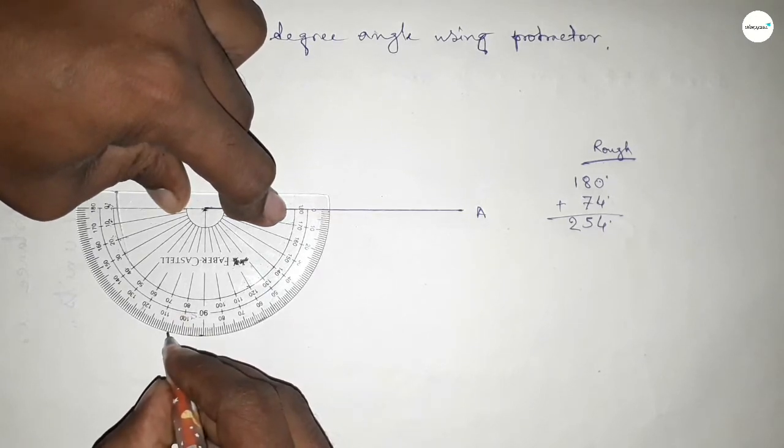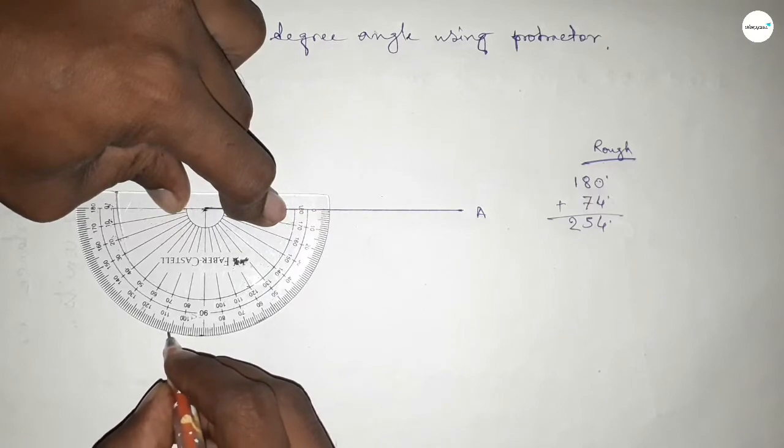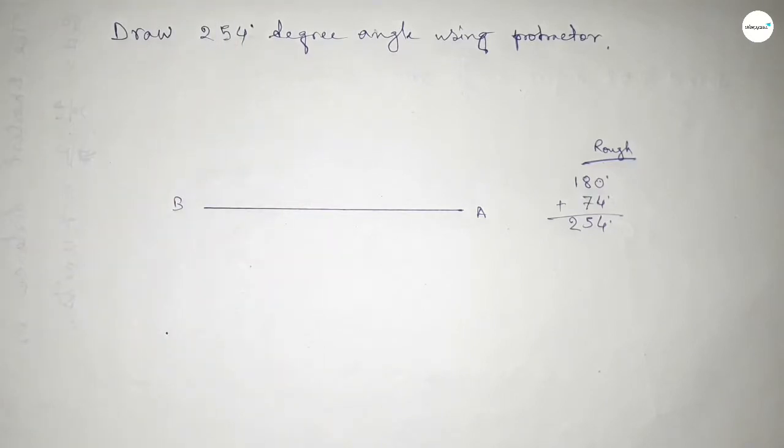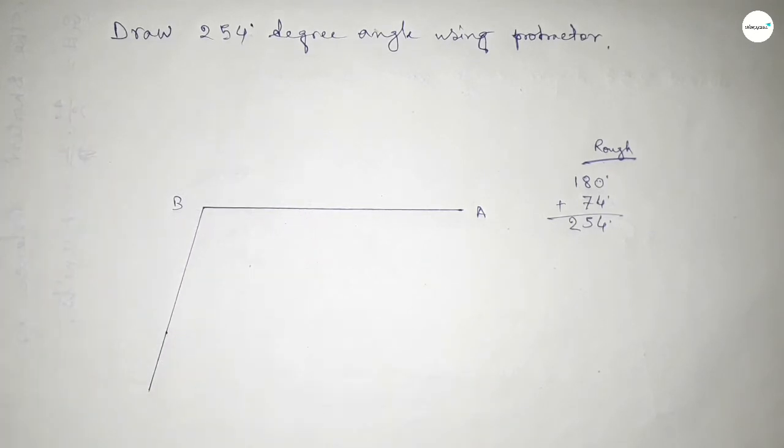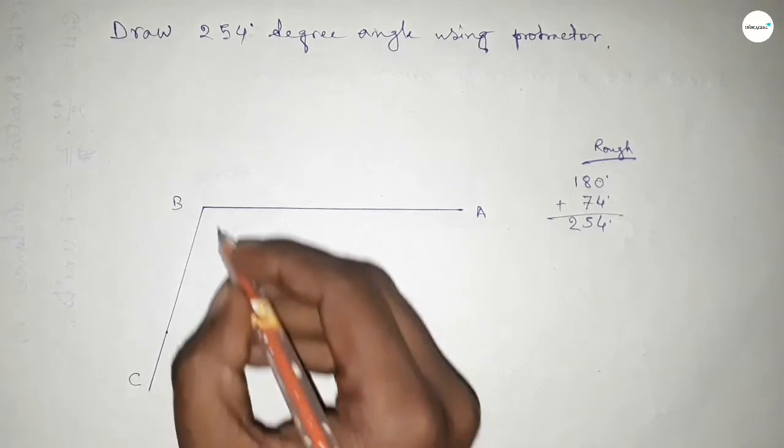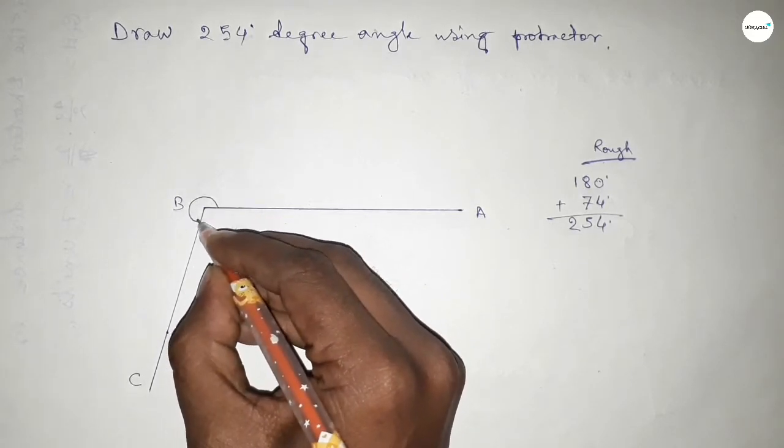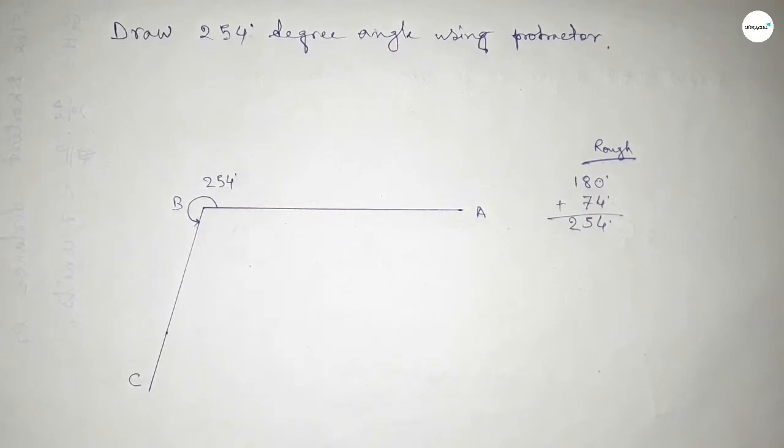So if we add 74 degree angle with 180 degree, then we can get 254 degree angle. Now joining this side and taking here C point. So angle ABC up to this, this is 254 degree angle.